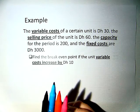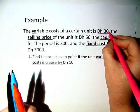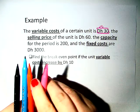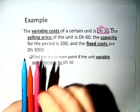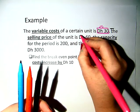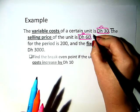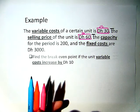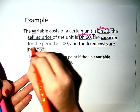So let's look at this example. The variable cost of a certain unit is 30 dirhams. Same problem as before. The selling price of the unit is 60 dirhams. The capacity for the period is 200, and the fixed costs are 3,000. So, the exact same setup as before.